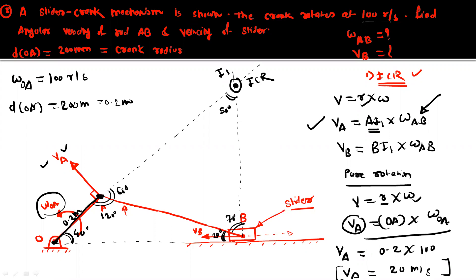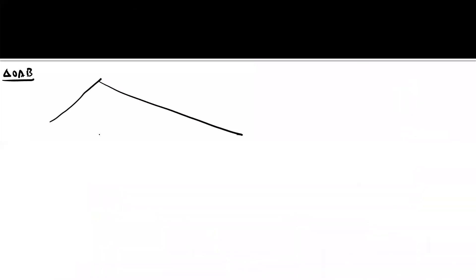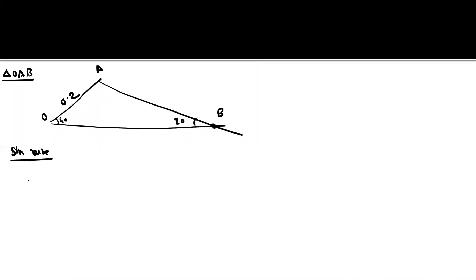Consider triangle OAB with angle 40 degrees at O, angle 20 degrees at B, and OA = 0.2 meters. Using the sine rule: OA/sin20 = AB/sin(opposite angle). This allows calculation of rod AB length. With all the angles determined in the triangle containing I1, we can apply the sine rule to find AI1 and BI1, then solve for Omega_AB and VB.